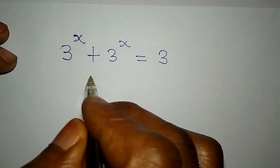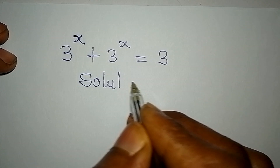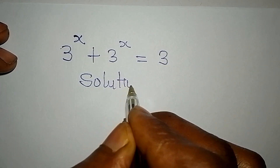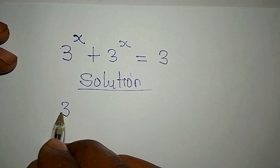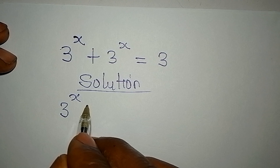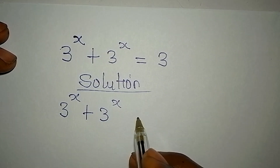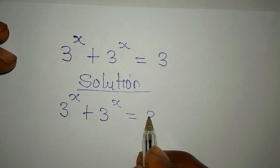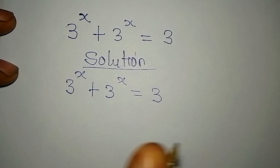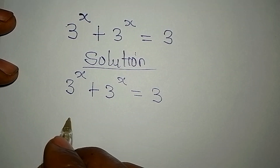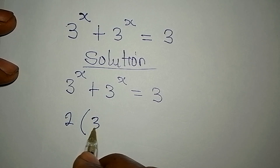Hello everyone, welcome to Foucault Mathematics. Let's provide the solution to 3 to the power of x plus 3 to the power of x equals 3. Okay, we have the same thing, so we can say 2 of 3 to the power of x.